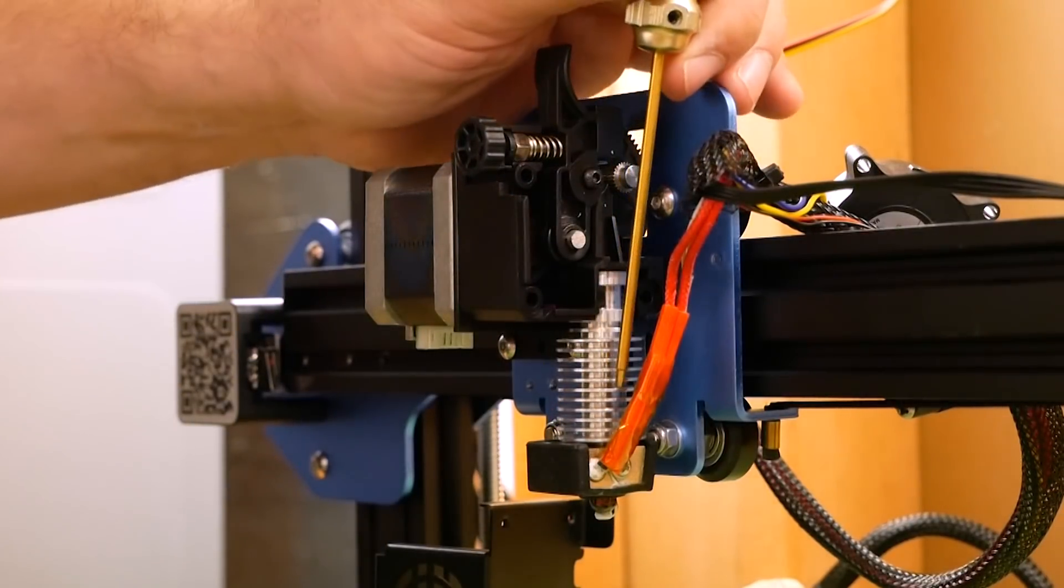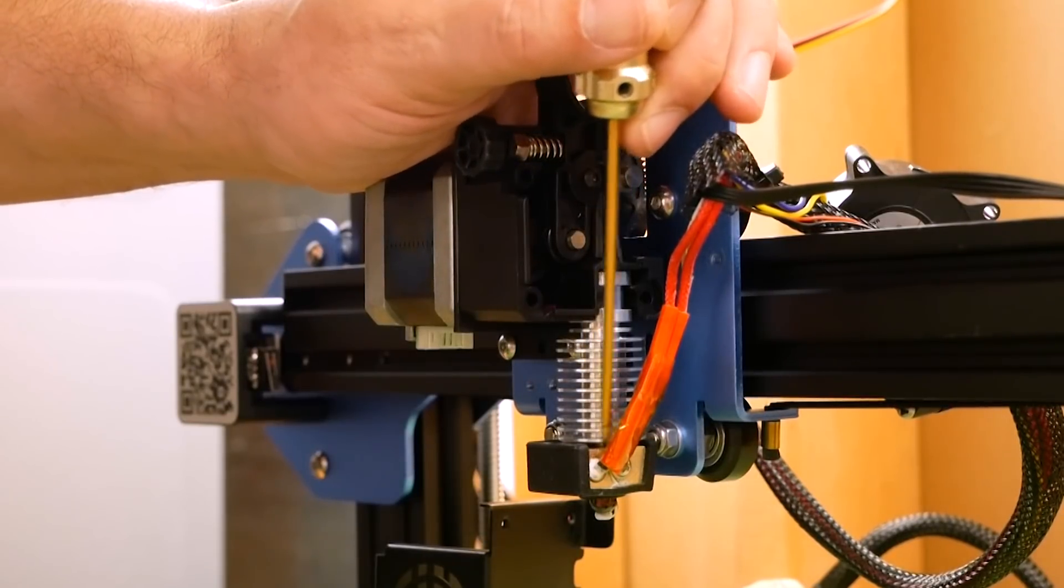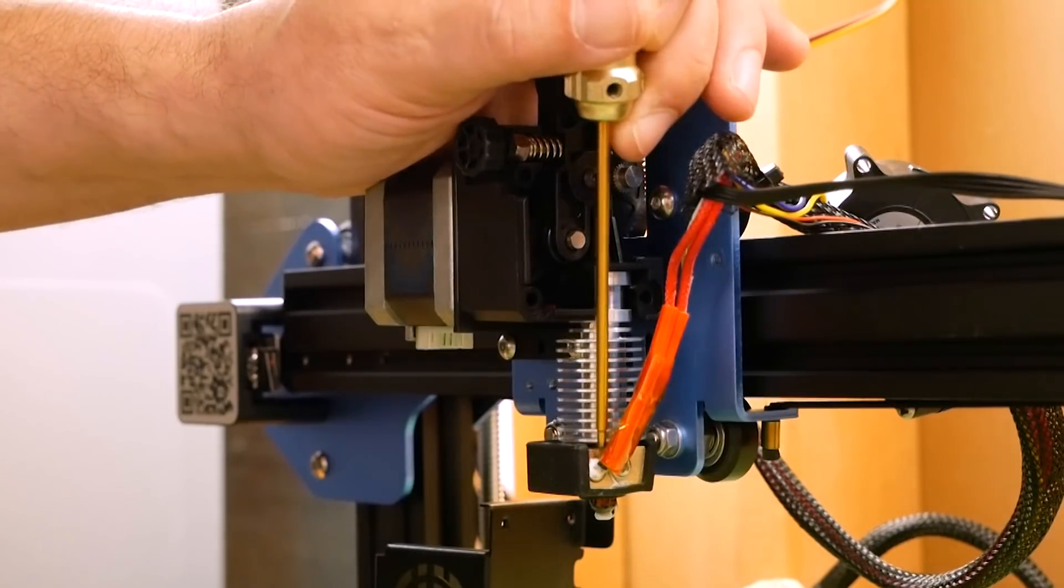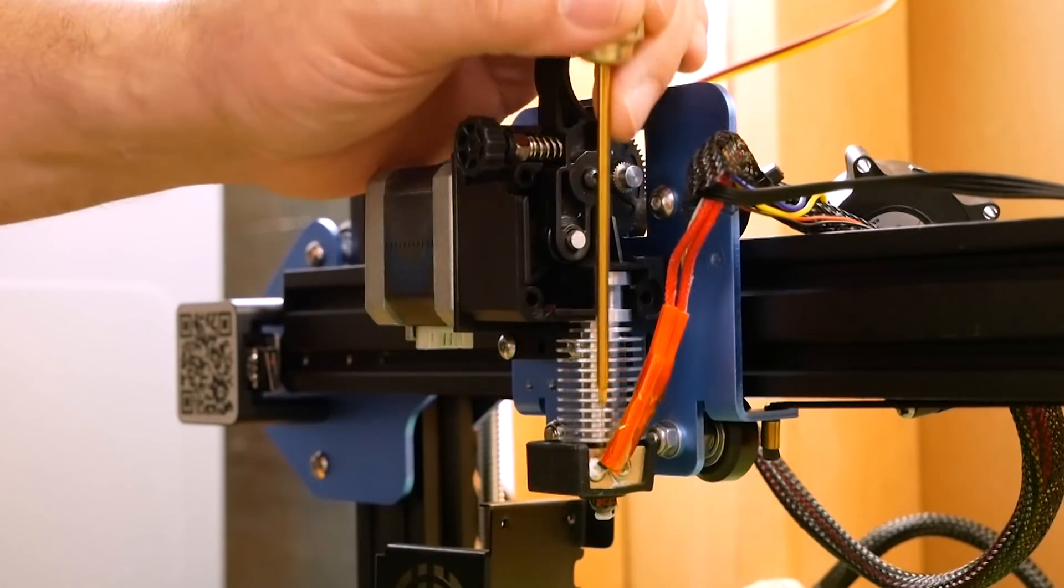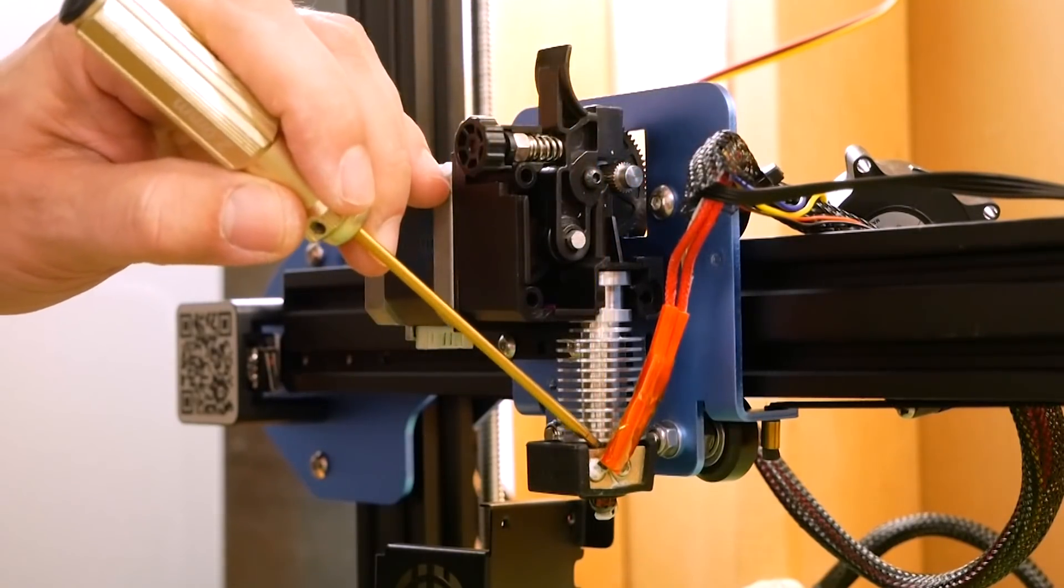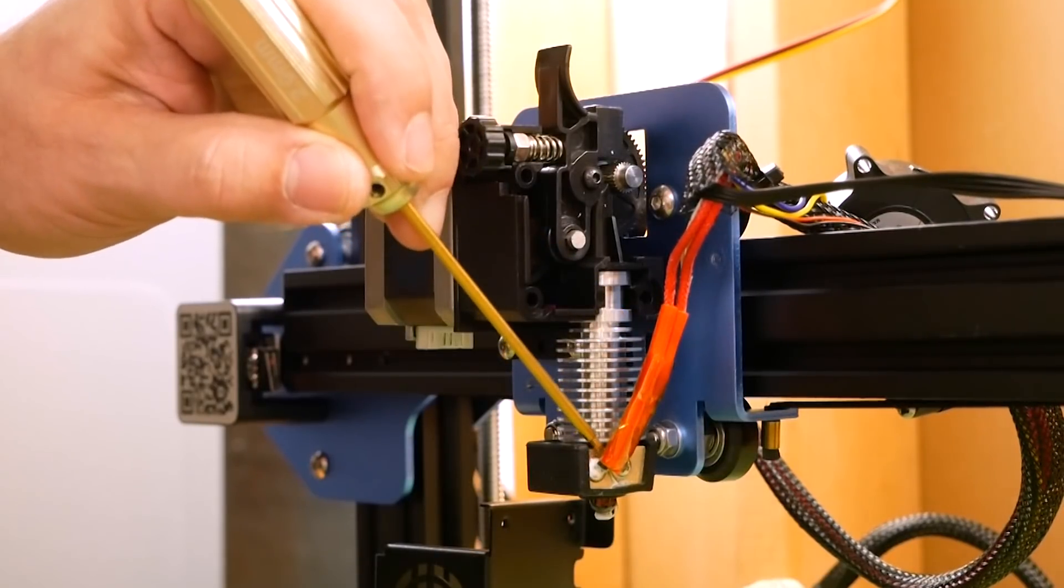Also, this part was not obvious to me when I first did this. This wiring going into the hot end is very fragile. There is a temperature sensor in here and the wiring can break very easily, and so you want to be really careful not to screw with this wiring and damage it.